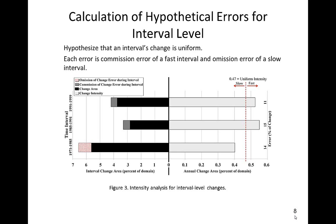On the left side of this figure, the union of the black and gray segments are changed according to the maps. The pink segment shows omission of change error and the gray segment shows commission of change errors. This color scheme holds for all the figures in this video.